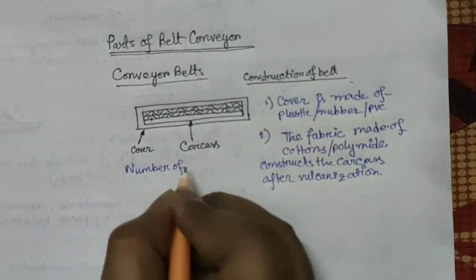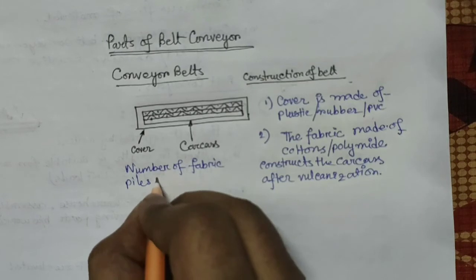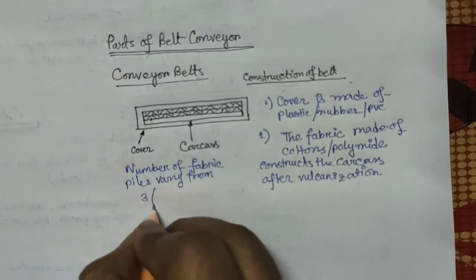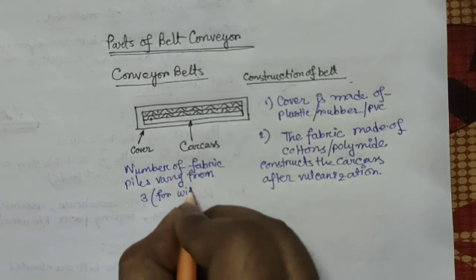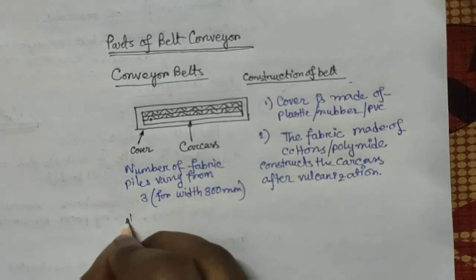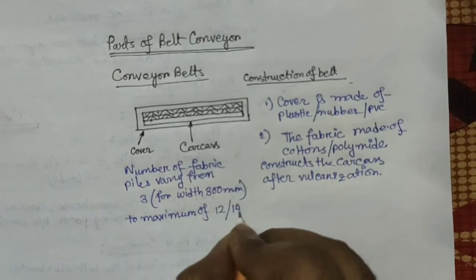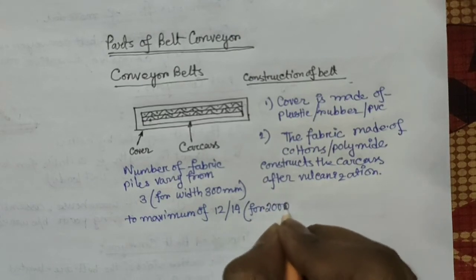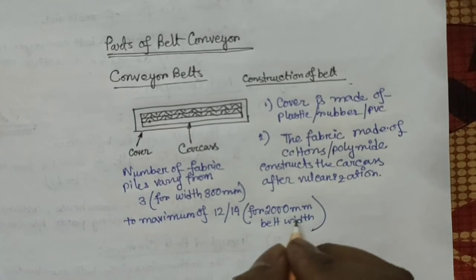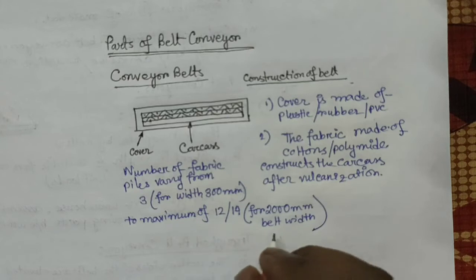For this type of belt, the number of fabric plies varies from three for a 300 mm wide belt to a maximum of 12 or 14 for a 2000 mm belt width. The number of plies varies within a specific range for a specific belt width.